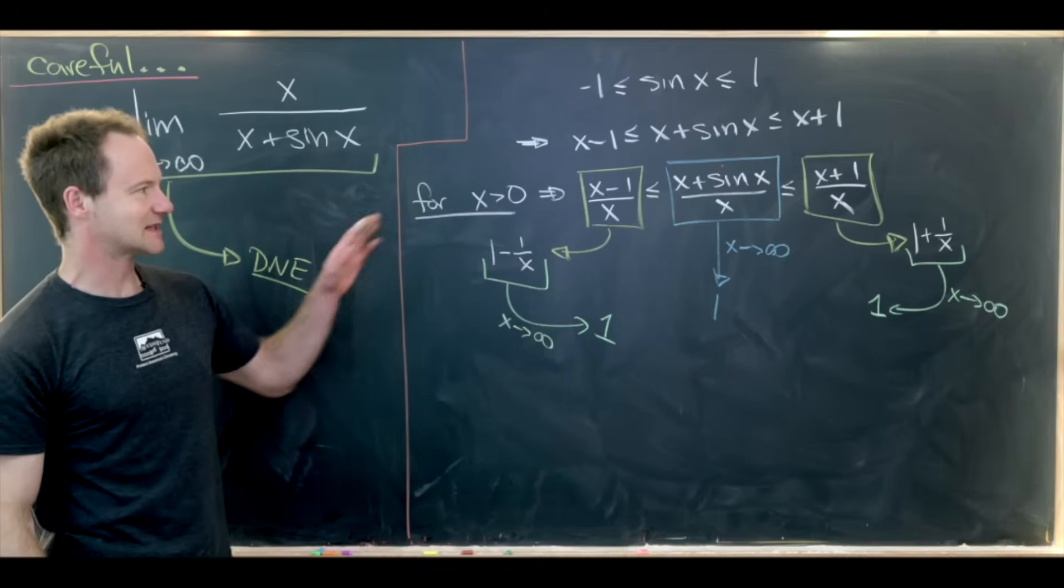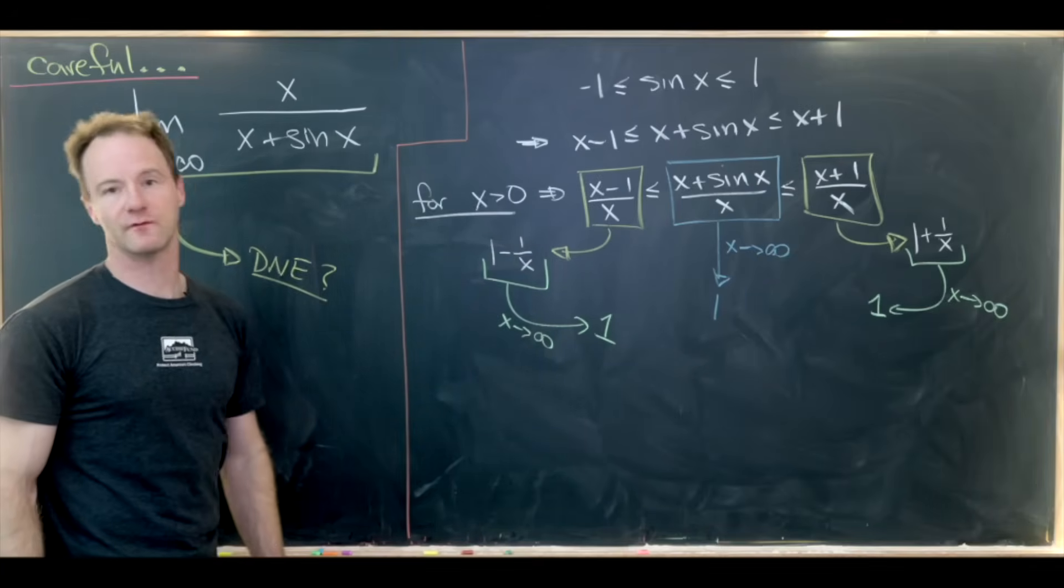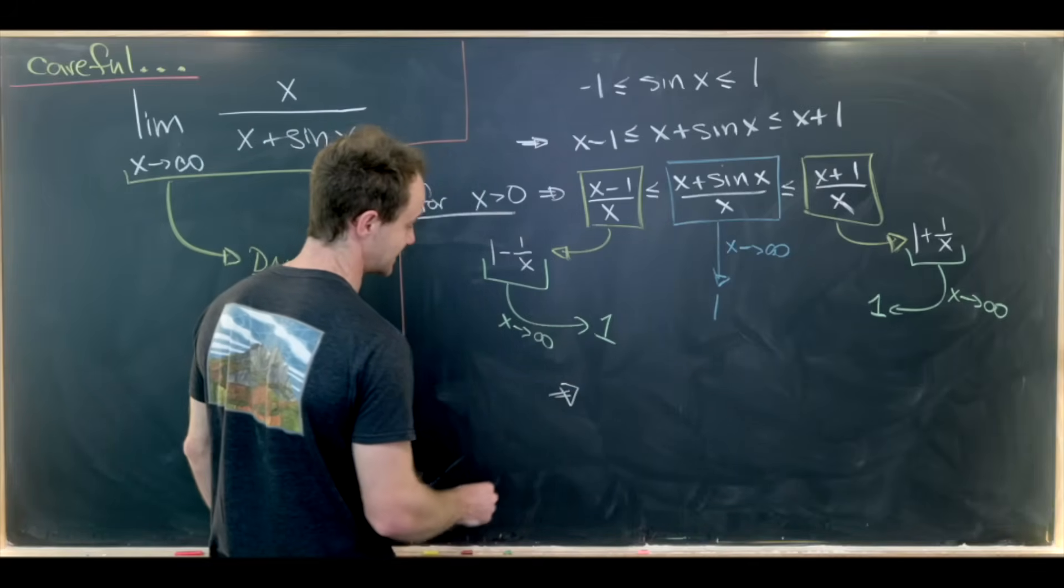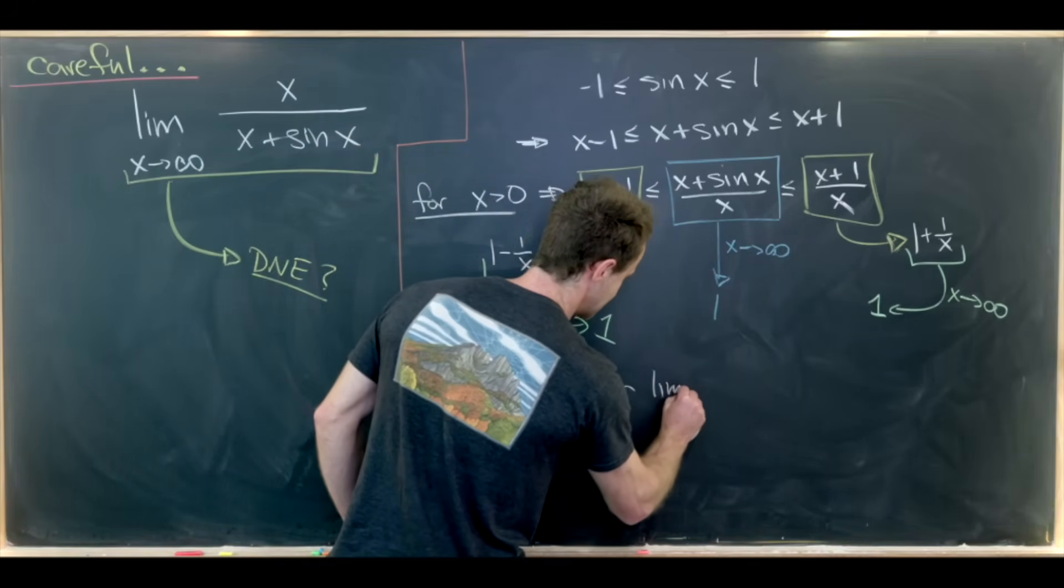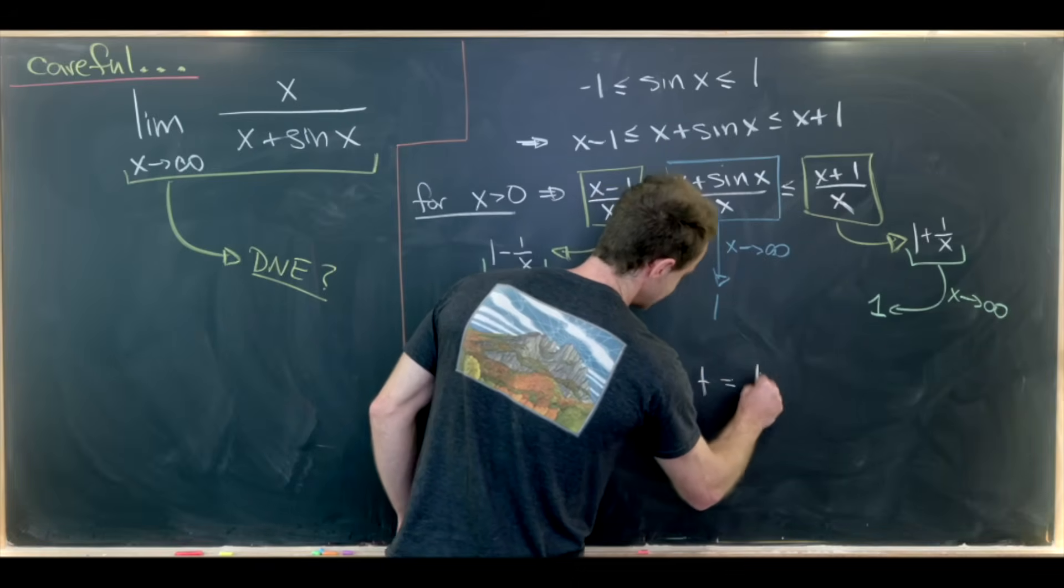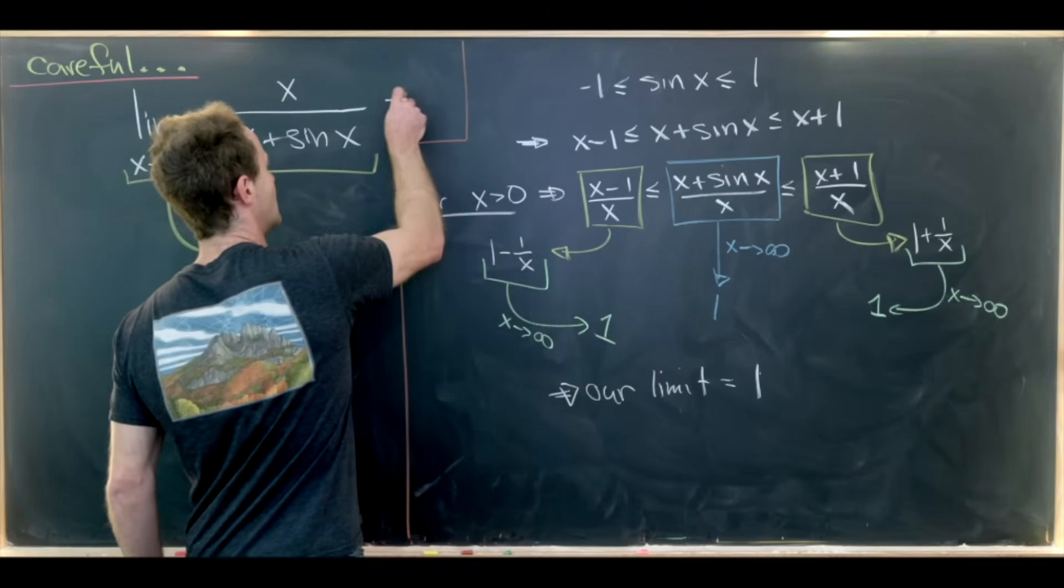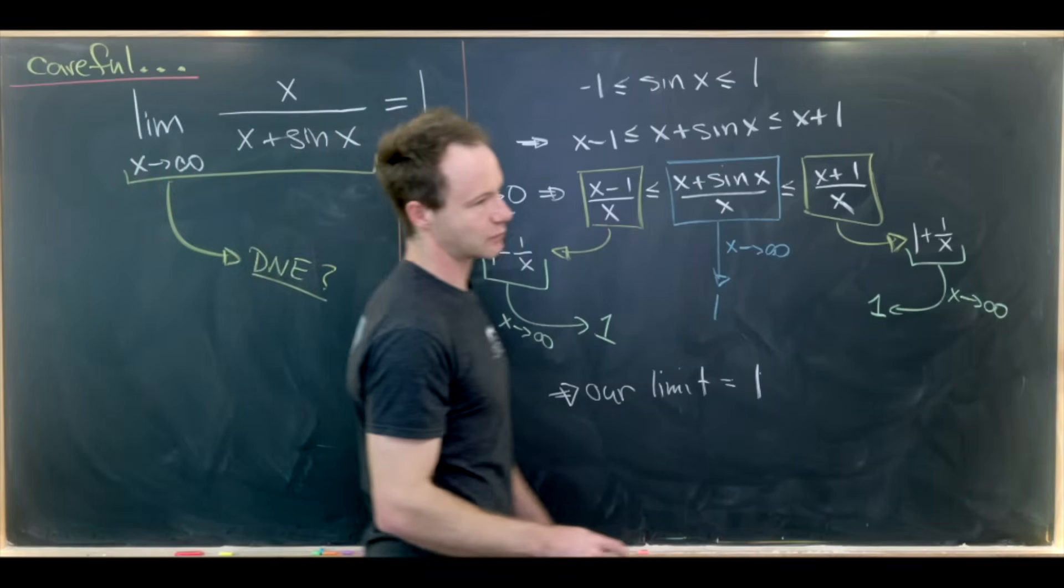But that's not exactly what we need. That's the reciprocal of what we need. But that means that if we take the reciprocal we'll have that our limit is equal to the reciprocal of 1. But the reciprocal of 1 is just 1. So now we've determined that this limit is equal to 1.